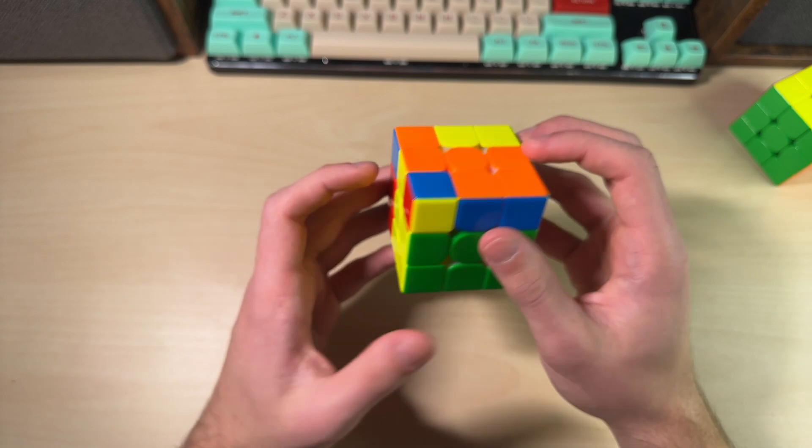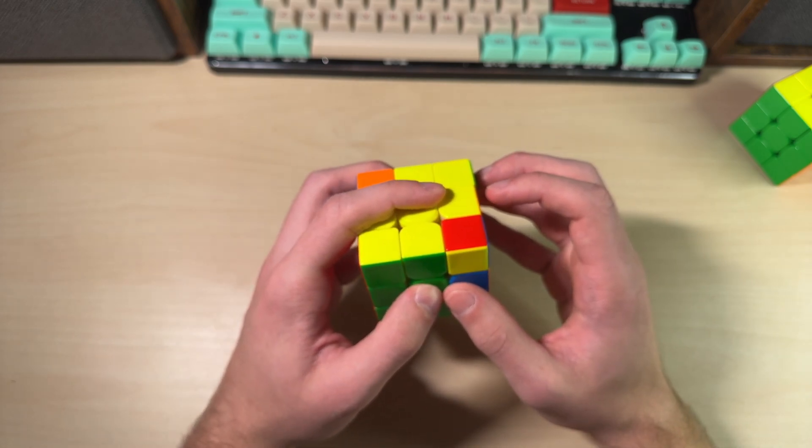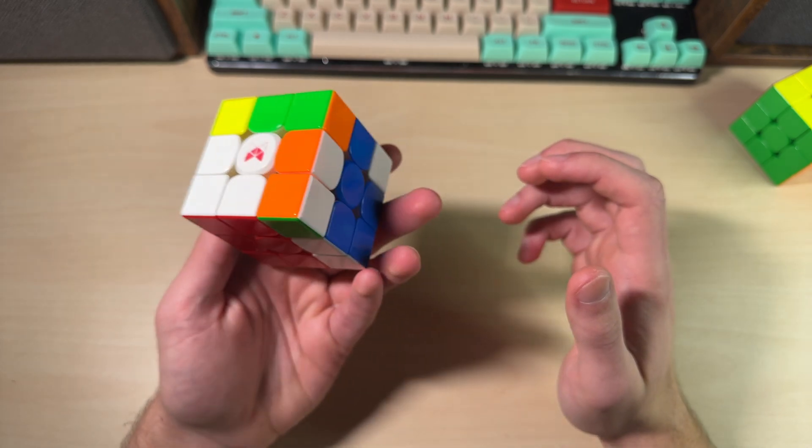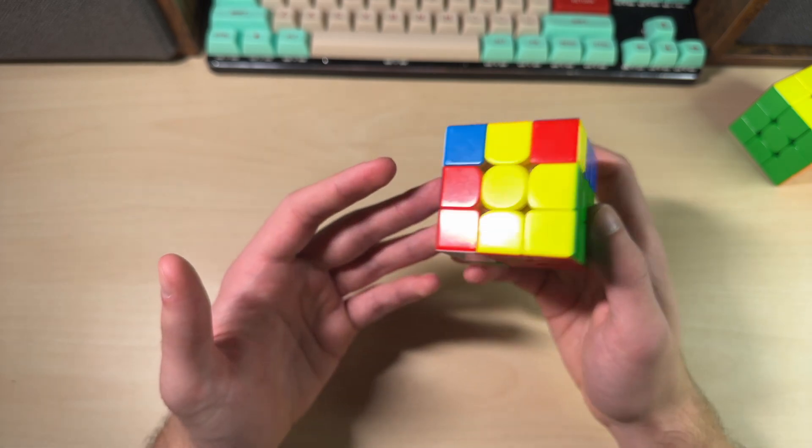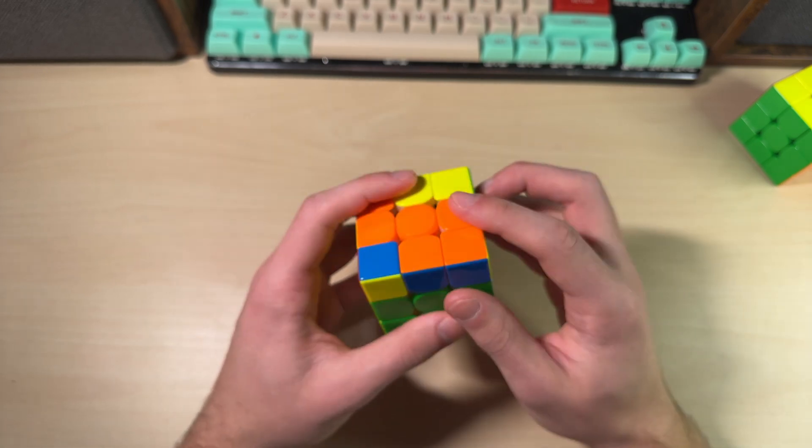But you can make an argument that doing a push wide F with your left index is better because it means you don't have to reload your pointer finger for the next move. It's a pretty marginal difference. Experiment both ways and see what works better for you. But for now, I use my right index.